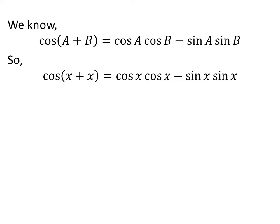If A equals x and B equals x, then cos(x + x) equals cos x cos x minus sin x sin x.